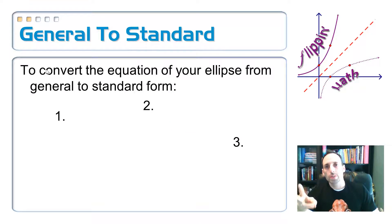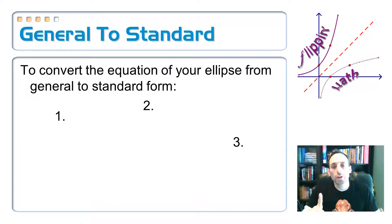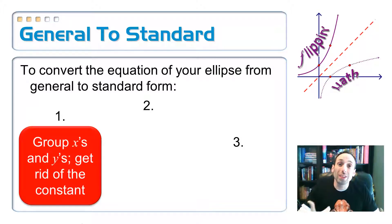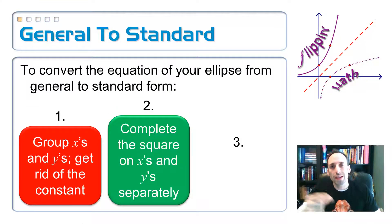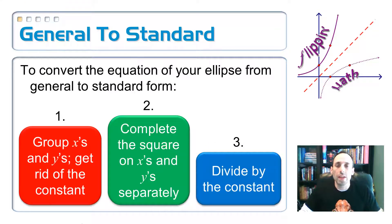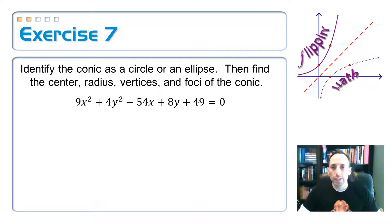Here are the three steps to convert a general elliptical equation into standard form. Step one: group your x's and y's together and move the constant to the opposite side of the equation. Step two: complete the square twice — separately for the x terms and the y terms — and remember whatever you add to the left side you must also add to the right side. Step three: divide both sides by the constant on the right, leaving you with 1 on the right side, which is what standard form requires.